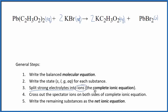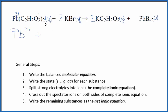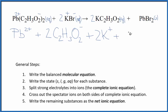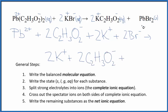Now we can split the strong electrolytes into their ions to get the complete ionic equation. For lead 2 acetate, we look at what lead is bonded to — each acetate ion has a 1- charge and we have two of them, so lead has to be 2+. We have the Pb2+ ion and then two acetate ions. For the KBr, potassium (group 1) has a 1+ charge and bromine has a 1- charge, so we have two potassium ions and two bromide ions. For the products, we have two potassium ions plus two acetate ions, and then lead 2 bromide.